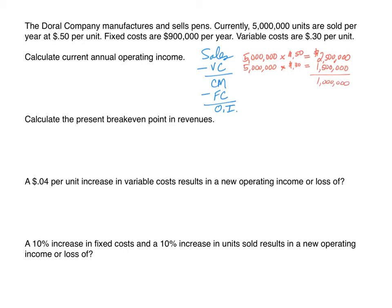Another way to do this is to skip directly to contribution margin. Contribution margin per unit is simply 50 cents minus 30 cents, which is 20 cents. Multiplying that times 5 million units gives us $1,000,000. Subtracting fixed costs of $900,000 gives us a current operating income of $100,000.